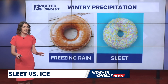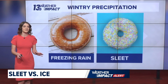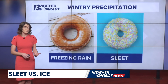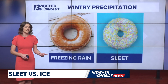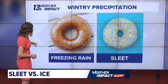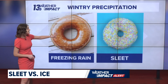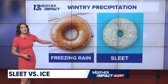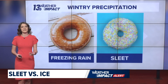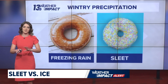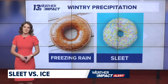like a glazed donut. You'll often hear us say the word 'glaze' when we're talking about freezing rain — that's exactly what you can picture, glazed over the donut. Sleet instead would be more solidified, kind of like the sprinkles that you would end up seeing on the donuts.